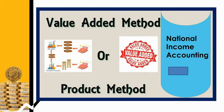Double counting is to be avoided under national income. The second precaution is self-consumption — the value of output used for self-consumption should be counted while measuring national income. The third precaution is that sale and purchase of second-hand goods should not be included, because it is already calculated. Calculating it again and again will become a problem for national income. These are the precautions to be seen under the product method.